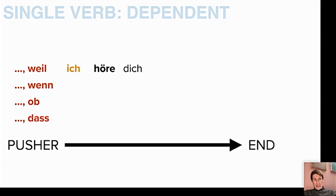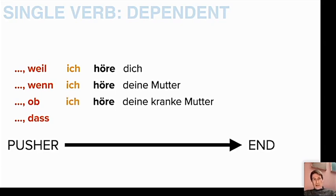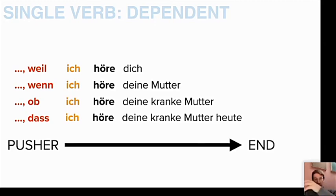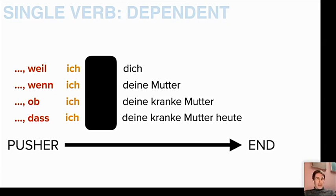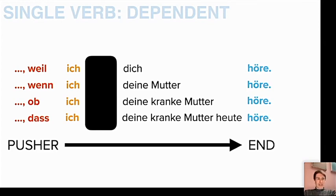Let's take a look at the other sentences and then you will see what changes. 'Ich höre deine Mutter.' 'Ich höre deine kranke Mutter.' 'Ich höre deine kranke Mutter heute.' Now if I add the 'while,' I cannot have 'höre' here — the 'höre' needs to be pushed to the end. So we have to delete this and put it here. And voilà, we have a perfect German sentence: because I — you — here. When I — your mother — here. Whether I — your sick mother — here. And that I — your sick mother today — here.